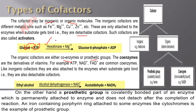Organic cofactors can be coenzymes or prosthetic groups. Coenzymes are derivatives of vitamins. If cofactors are detachable or non-covalently bound, they are called coenzymes. If they are permanently and covalently attached — without which the reaction cannot occur — they are called prosthetic groups. An example of a prosthetic group is the heme group; an example of a coenzyme is NAD.